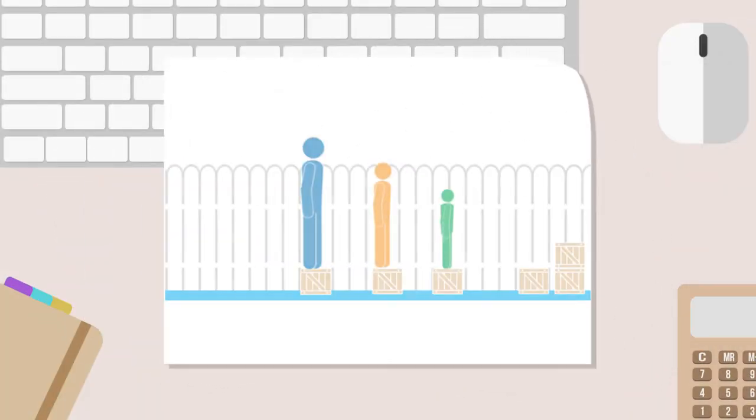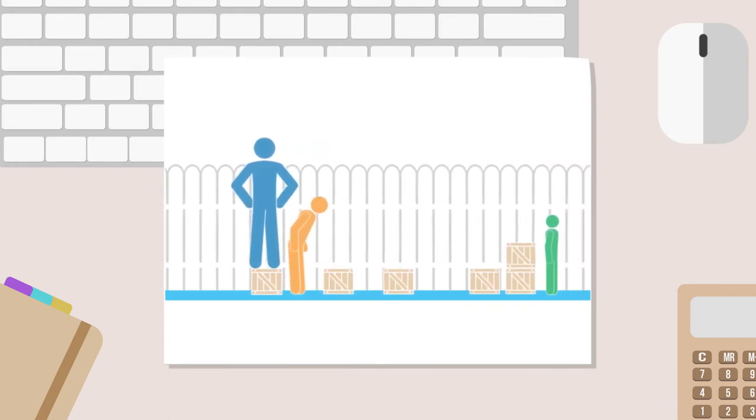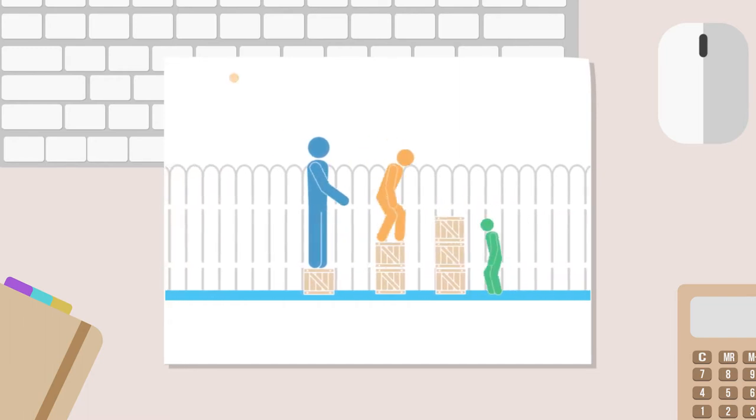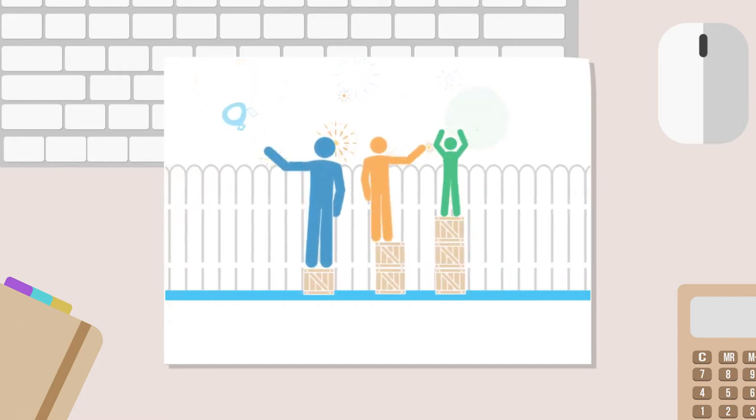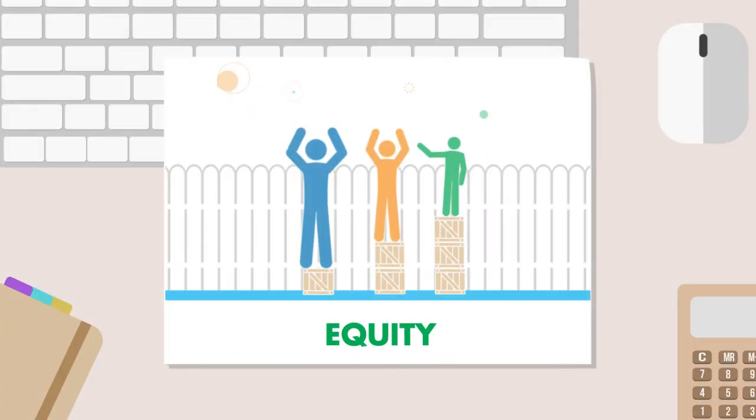Equity is the quality of being fair, which often requires treatment that is not the same. Individuals are given different supports, so that they have equal access to the view. They are being treated equitably. This scene shows equity.